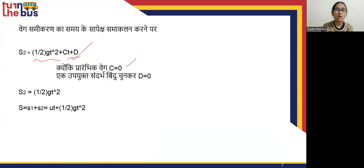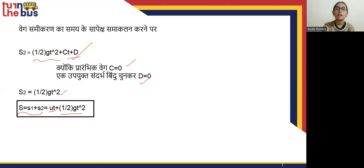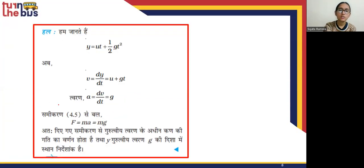When u equals 0, we get S2 = ½gt². The total displacement S equals S1 plus S2, where S1 = ut and S2 = ½gt². Therefore, S = ut + ½gt². This is the value given in the question. We know that S = ut + ½gt², and from here we can differentiate to proceed further.